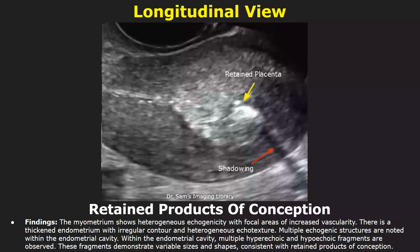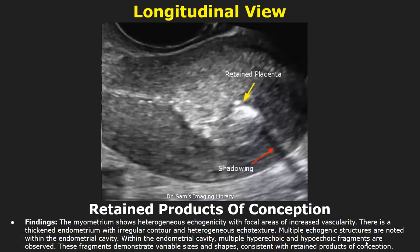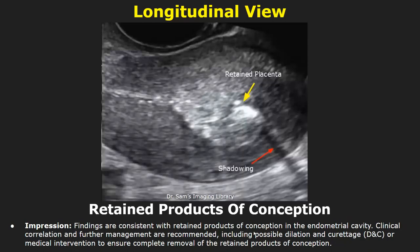Now we will look at retained products of conception. The myometrium shows heterogeneous echogenicity with focal areas of increased vascularity. There is a thickened endometrium with irregular contour and heterogeneous echotexture. Multiple echogenic structures are noted within the endometrial cavity and multiple hyperechoic and hypoechoic fragments are observed. In the impression, the findings are consistent with retained products of conception in the endometrial cavity, and you can advise DNC or medical interventions to ensure complete removal.